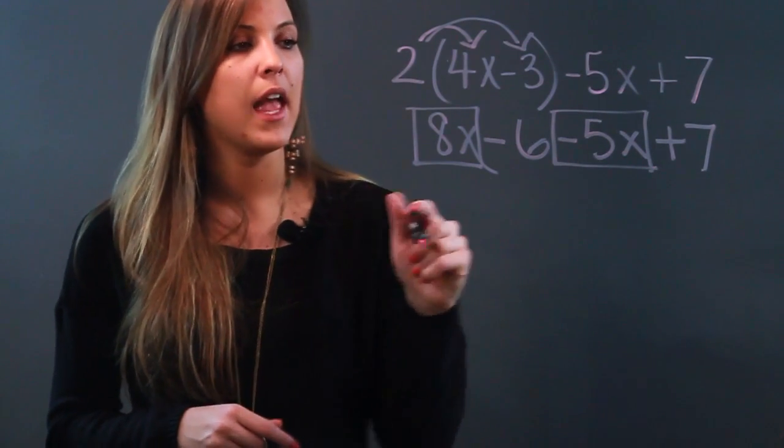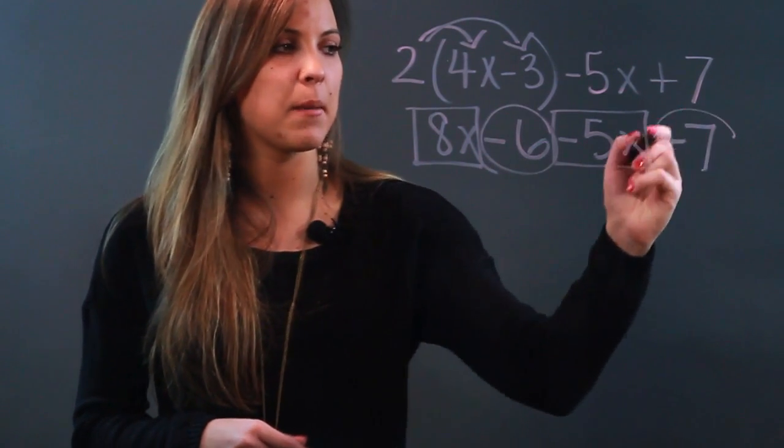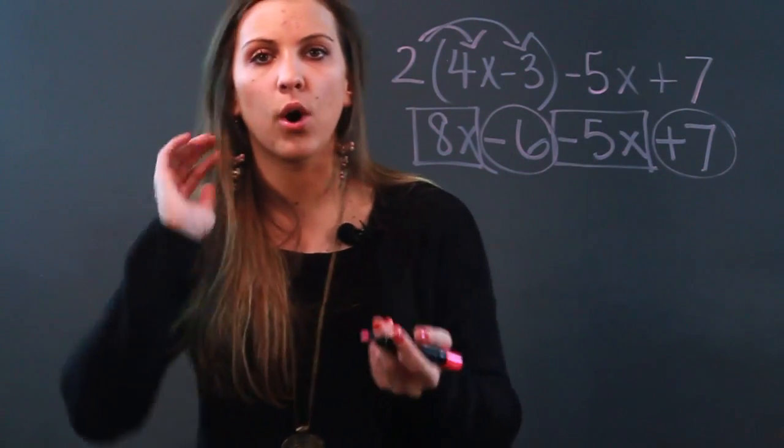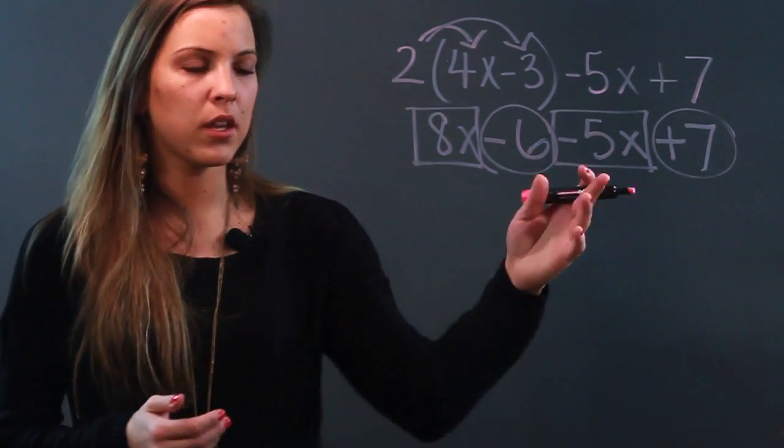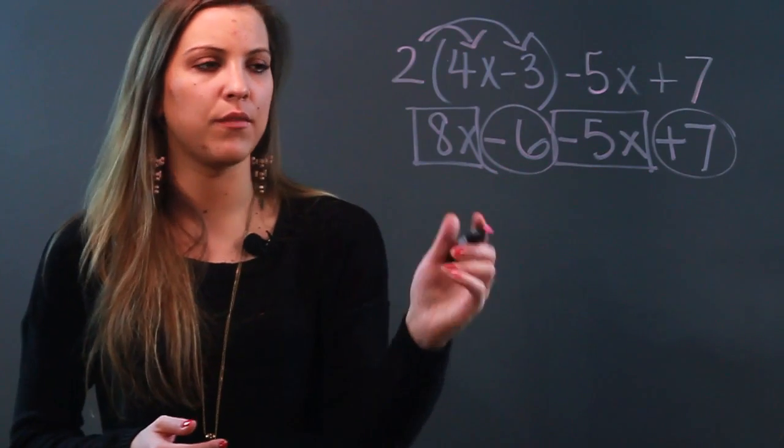That's very important. And then for negative 6, my like term is positive 7 because they're numbers and I can always combine numbers. Now I'm going to combine by dealing with the coefficients and bringing down the variable.